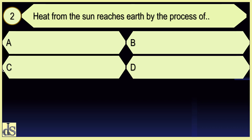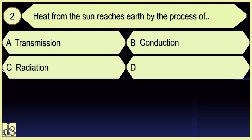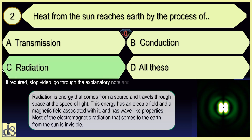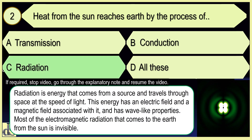Heat from the Sun reaches Earth by the process of Radiation.